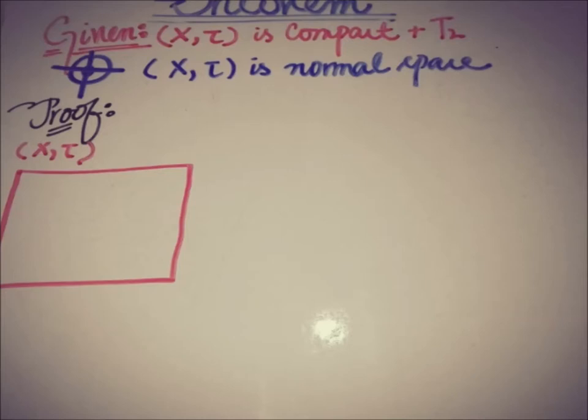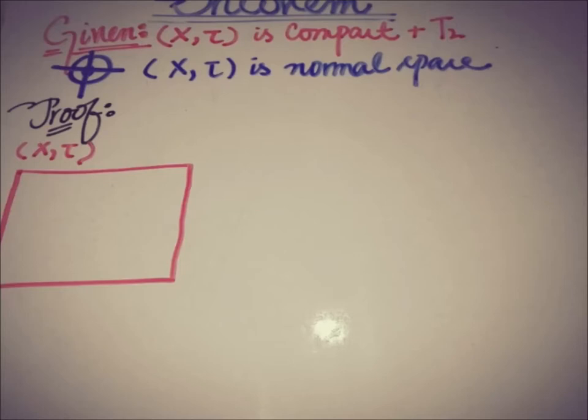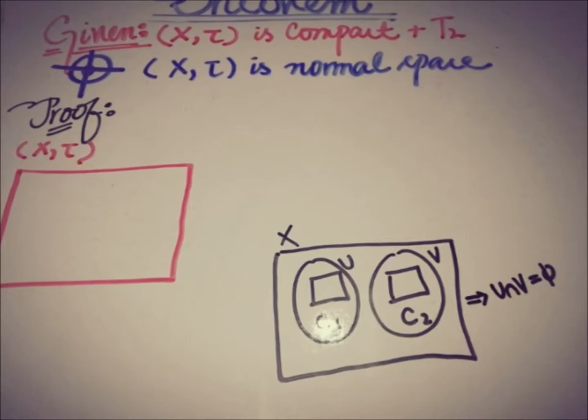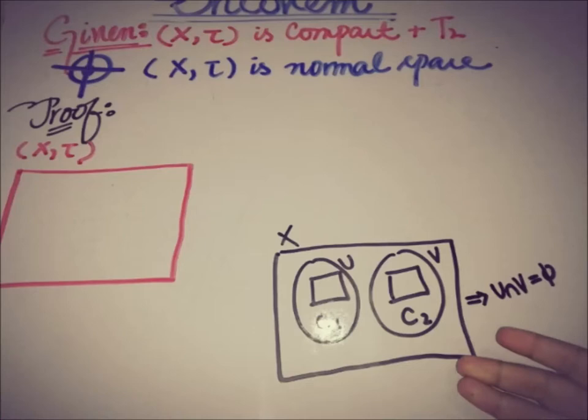Initially we have a space that is compact and Hausdorff, and the target is to show that this space is a normal space. For a normal space we must have two open sets — we recall the definition: a space is said to be normal if we have two open sets that separate two closed sets such that the intersection of the two open sets is empty. So let's take two disjoint closed sets in this compact Hausdorff space and name them C1 and C2.